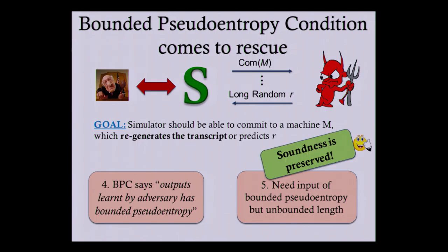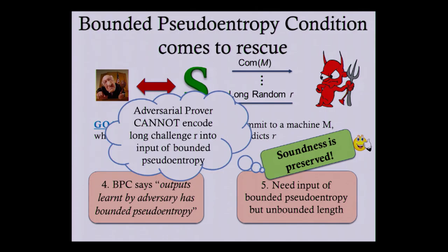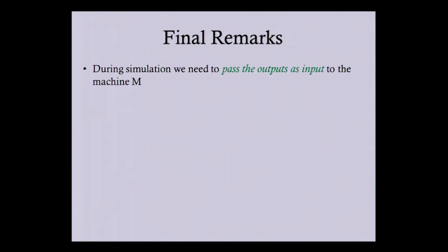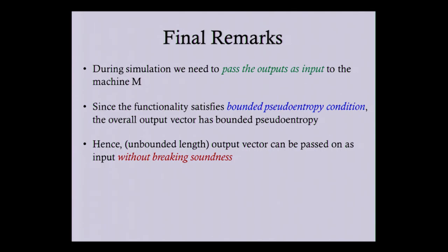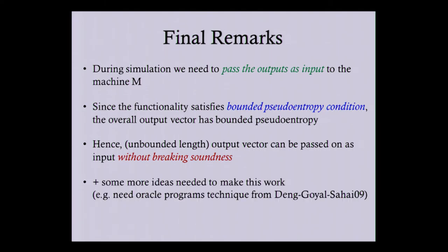We cannot allow arbitrary inputs of unbounded length as this would break soundness — an adversarial prover could encode the random challenge R from an honest verifier into the input to M and trivially break soundness. Here our bounded pseudo-entropy condition comes to the rescue: though the output vector may be of unbounded length, the total entropy is bounded. So we allow inputs of unbounded length but only of bounded pseudo-entropy, ensured by the testability condition, which preserves soundness since an adversarial prover cannot encode a high-entropy challenge into something of bounded pseudo-entropy.